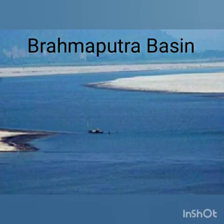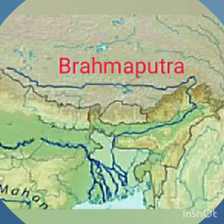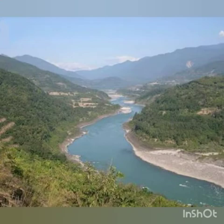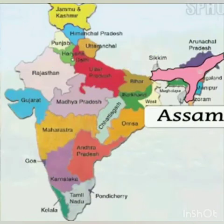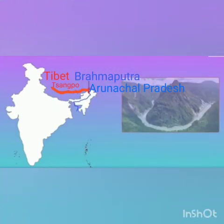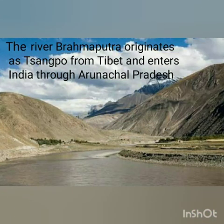The Brahmaputra basin lies in the eastern part of the northern plains. This river basin is narrower than the other two basins. The state of Assam lies in this basin. This area is watered by the river Brahmaputra.